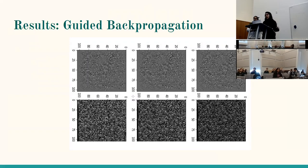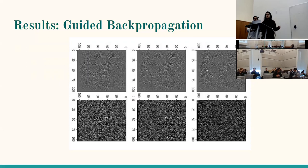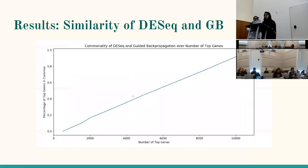We averaged all of the guided back propagation images together across all samples, then took the pixels with the highest intensity, which correspond to genes most correlated with the output. This gave us the top differentially expressed genes that we were able to rank. We also ran the same analysis with DESeq2. When comparing the top differentially expressed genes from guided back propagation and DESeq2, we found they were not very similar — within the top 2,000 genes, approximately 20% were shared — so the two methods gave somewhat different results.